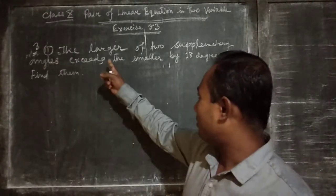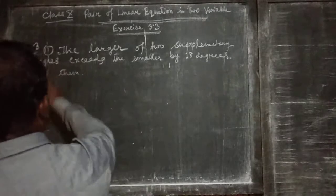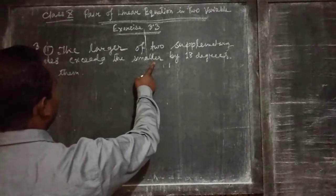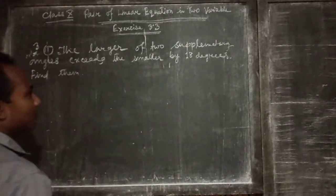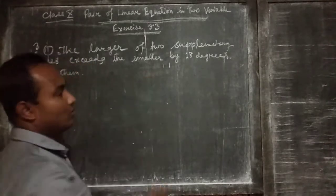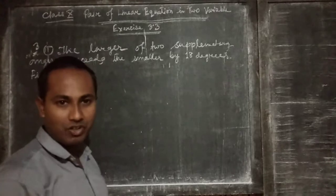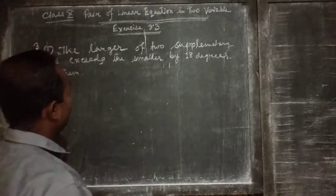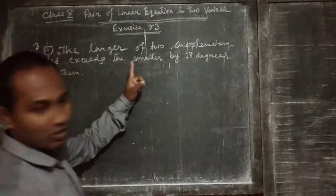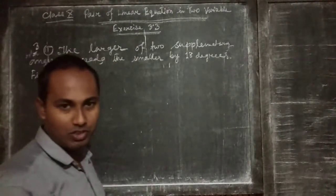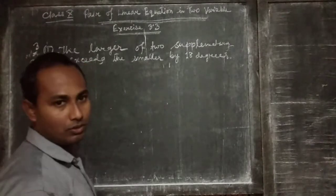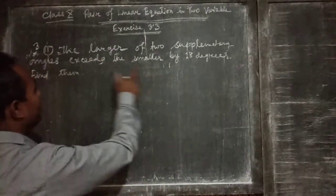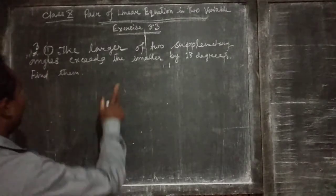The problem states: the larger of two supplementary angles exceeds the smaller by 18 degrees. Find them. We have to solve this question by the substitution method. Here, two angles are given and two conditions are given. From these two conditions, we have to make two linear equations and solve to find out the values of the variables.